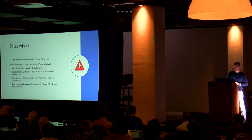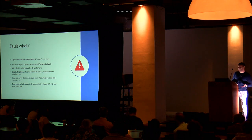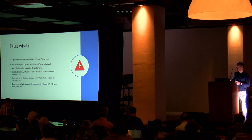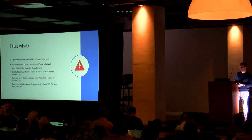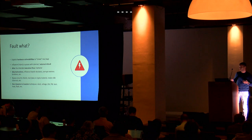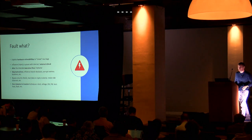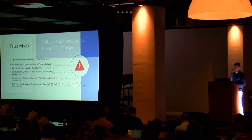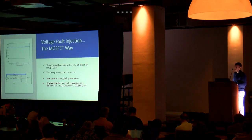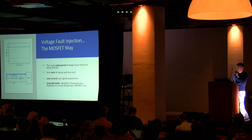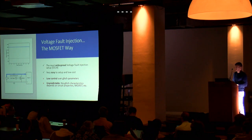The stimuli can be the clock, voltage, EM, focused ion beam, laser, heat, or flashlights. In a CPU, you typically skip instructions or corrupt memory registers to subvert decisions. Of course, you do this to bypass security measures, leak crypto keys, or create side channels — it depends on what you want to do. This talk is specifically about voltage fault injection.